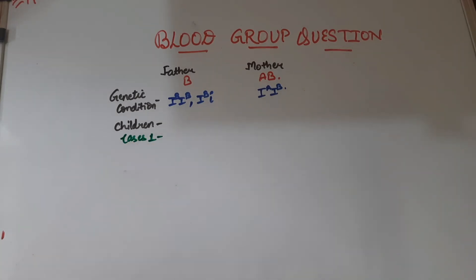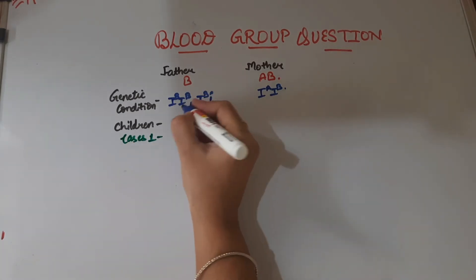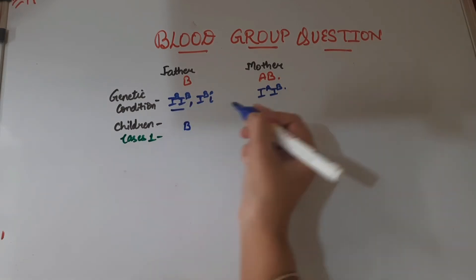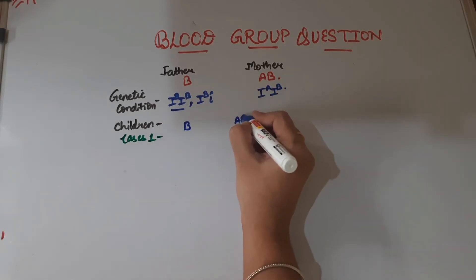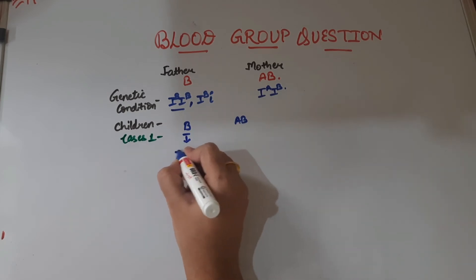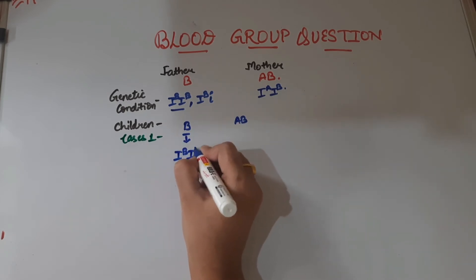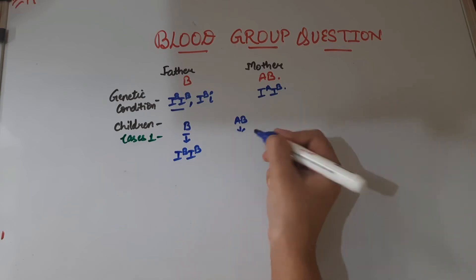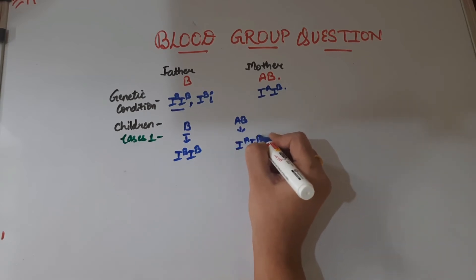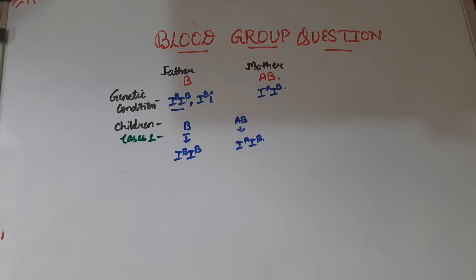In Case 1, we take the condition where the father belongs to the homozygous condition. Father has blood group B, mother has blood group AB. The genetic condition of the father is IB and IB, and the genetic condition of the mother is IA and IB. Let us see what possibilities of blood group we are going to get in the case of children from this cross.